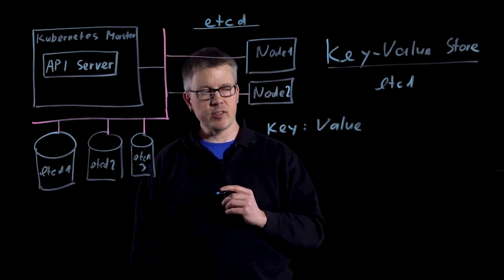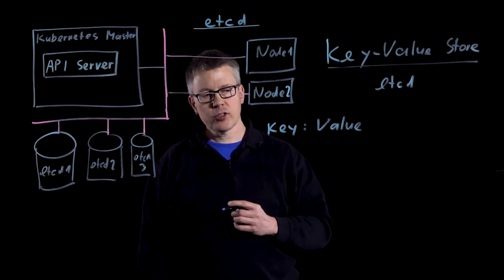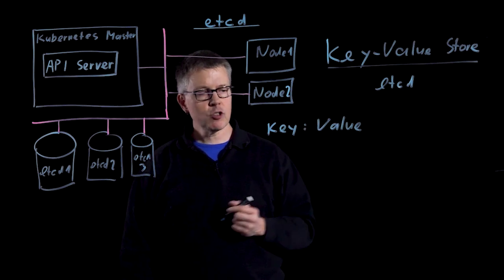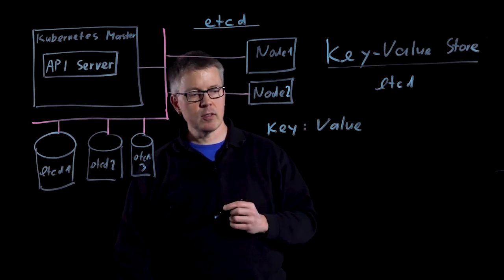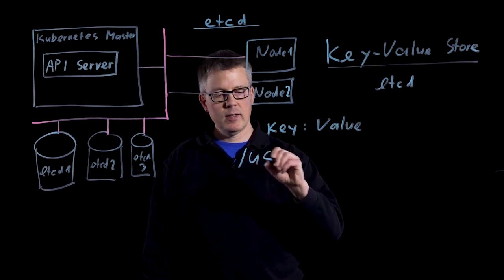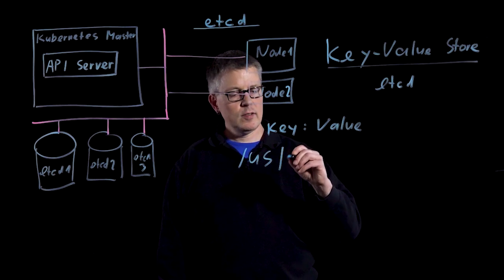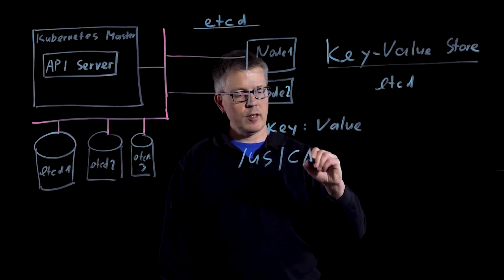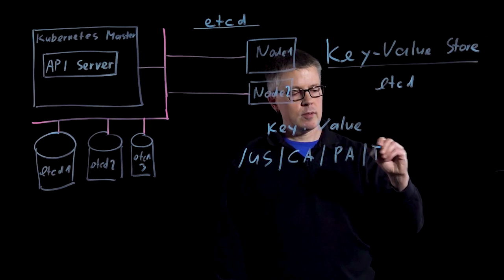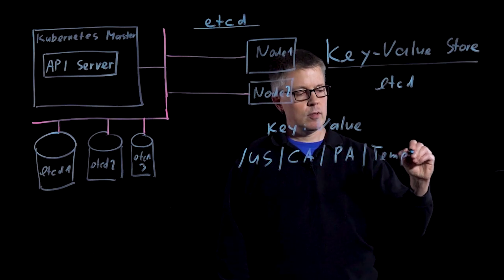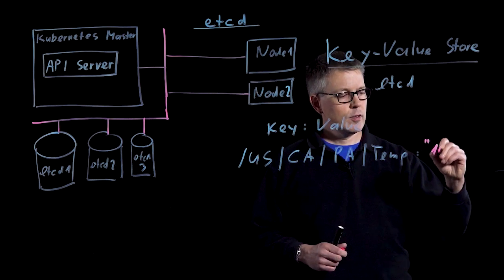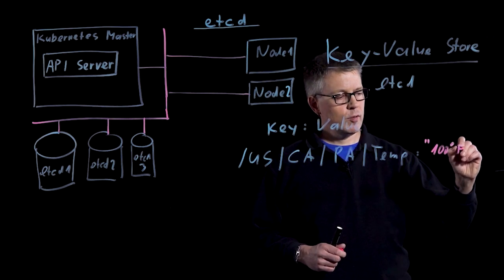The first question you have to answer: how do we describe the location? We could use many different mechanisms. In this case, as an example, I just take the country, the state California, Palo Alto, and I want to know the temperature. And the value is 100 degrees Fahrenheit.